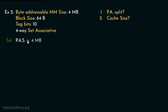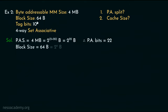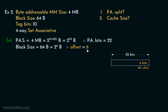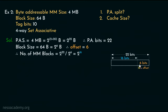The main memory size is 4 megabytes. Since 4 is 2 squared and megabyte is 2 to the power 20, the physical address space is 2 to the power 22 bytes, so we will need 22 bits for the physical address. The block size is 64 bytes, which is 2 to the power 6 bytes, so 6 bits will be used for offset. Dividing 2 to the power 22 by 2 to the power 6 gives 2 to the power 16 block numbers, so 16 bits are used for block numbers. The tag bits are given as 10 bits.